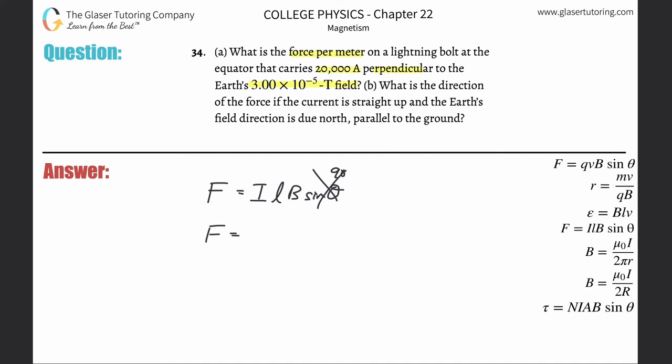This simplifies down to ILB. Now here's the thing: they asked for force per meter, not just force. Based on what I just mentioned, which variable represents meters? The length. So you have to divide both sides by L. When you do that, that side cancels, or you can just bring it on down.